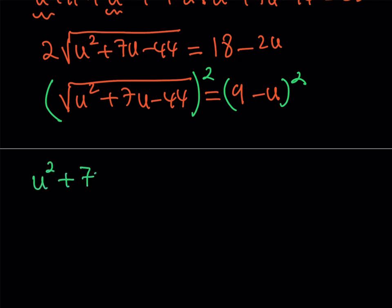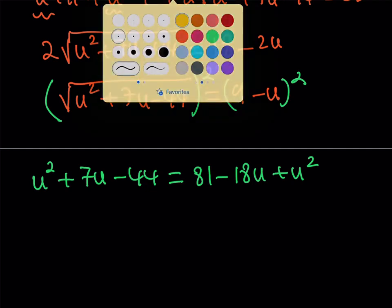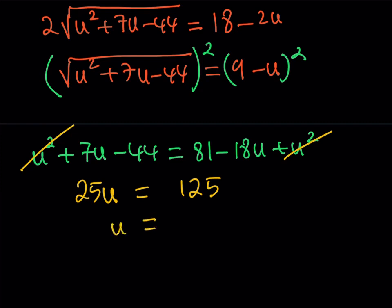So this is going to be u squared plus 7u minus 44 and then the right hand side is going to be 81 minus 18u plus u squared. This is what I was not telling you, u squared is going to cancel out and you're going to end up with a linear equation. Not a quadratic but a linear one which is kind of easy to solve. So add 18u so that should be 25u and then you're supposed to add 44 to 81 which makes 125.